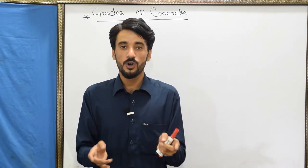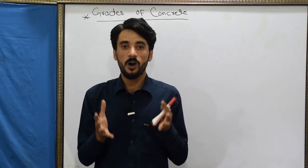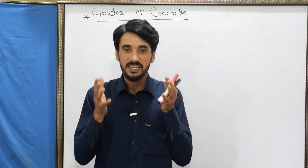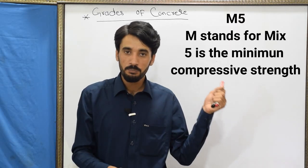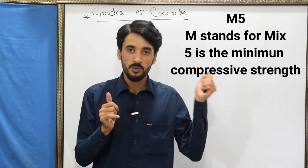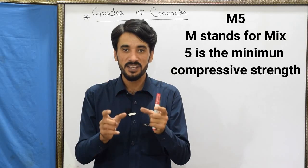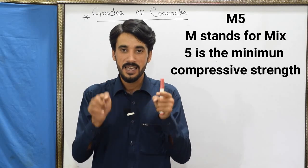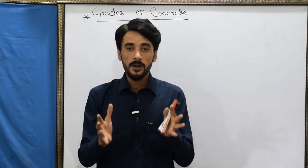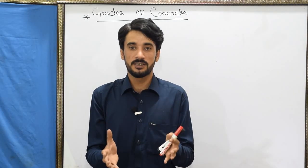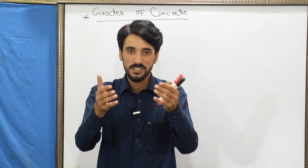In this video, we are going to see different grades of concrete. The grade of concrete is represented by the capital letter M followed by a number — for example, M5. M stands for mix, and the number indicates the minimum compressive strength of concrete in Newton per millimeter square after 28 days. The grade of concrete also represents the ratio of cement to fine aggregate to coarse aggregate.